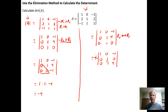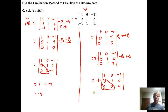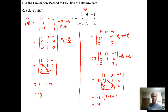Now we continue. To get a 0 in that position, we take the opposite of row 2 and add it to row 3: opposite of −1 plus 1 is 0, opposite of 0 plus 4 is 4. We now have zeros below the main diagonal — an upper triangular matrix. So the determinant equals −1 times the product of the diagonal elements: 1 × 1 × 4. Multiplying this out gives us −4, the same answer we had originally.